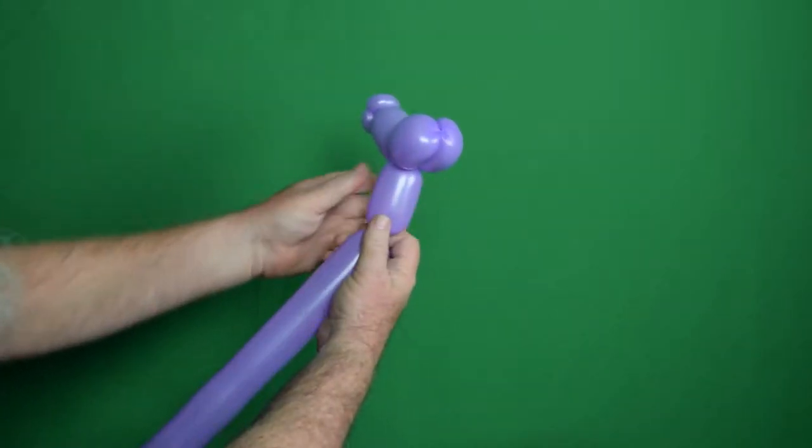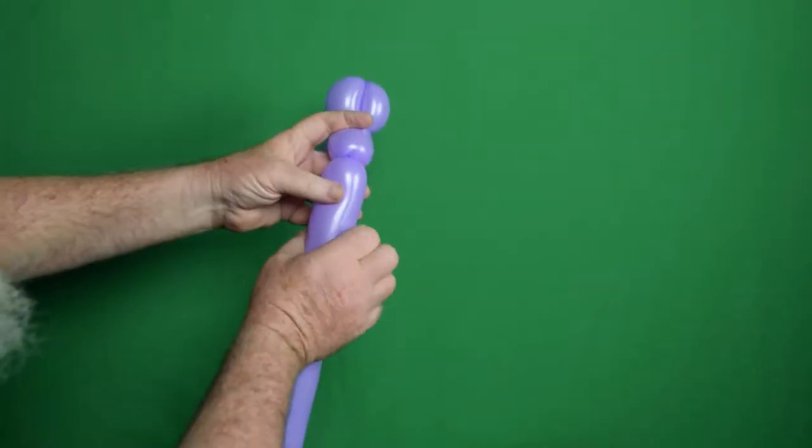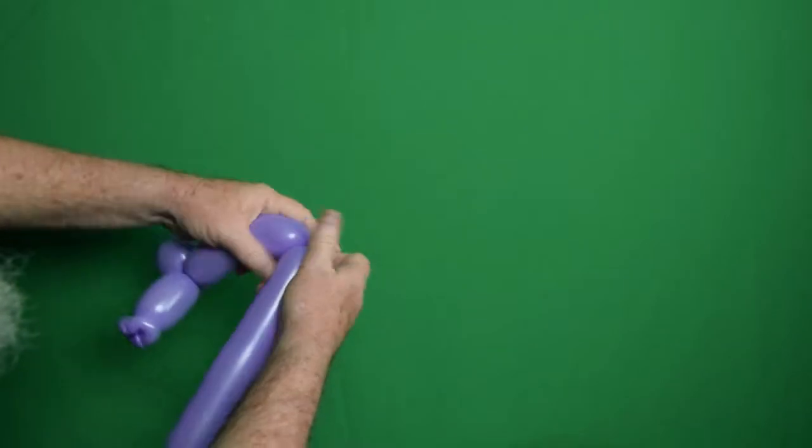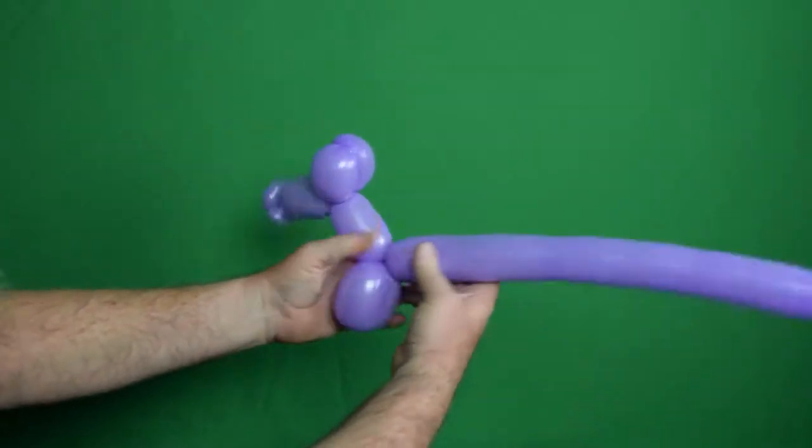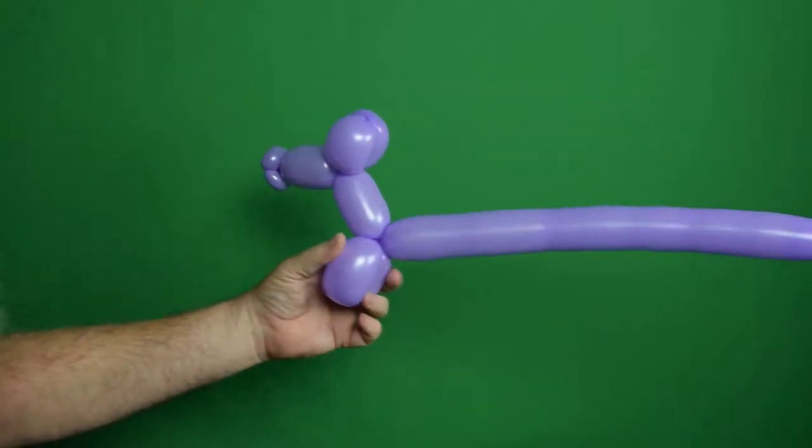Then I'm going to do about a four-finger bubble, followed by two three-finger bubbles. We're going to twist the two three-finger bubbles together. Those are going to be our horse's front legs.